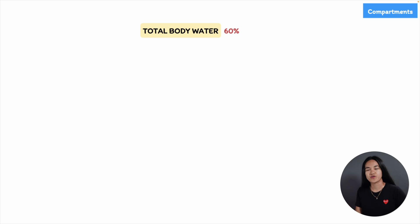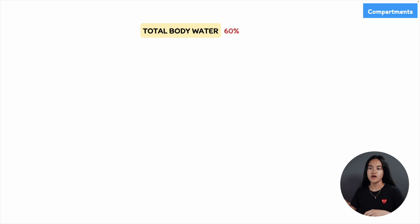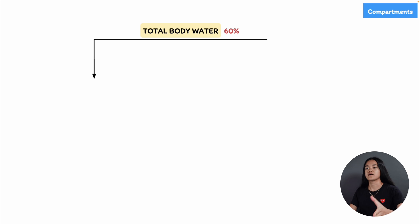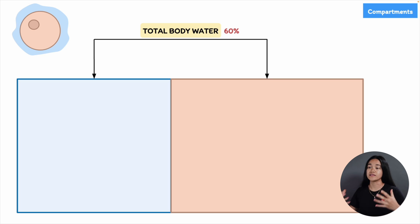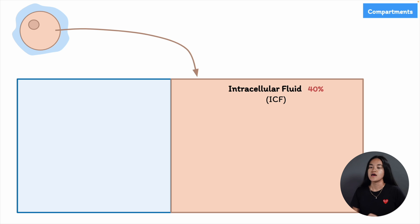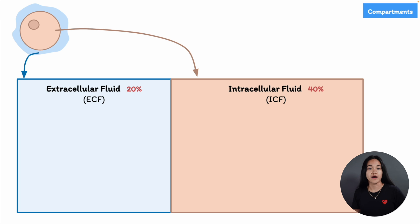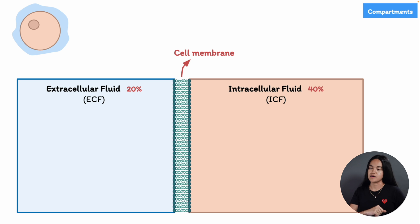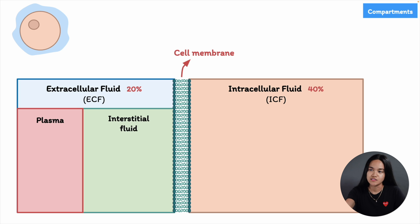Total body water refers to the sum of all water content in the body — it's approximately 60% of body weight, though this varies depending on factors such as age and body composition. Body water is distributed inside cells and outside cells. The water inside all body cells forms a single compartment called intracellular fluid, or ICF, which is approximately 40% of body weight. All water outside the cells forms the extracellular fluid, ECF, at about 20% of body weight. The cell membrane separates the ICF from the ECF.